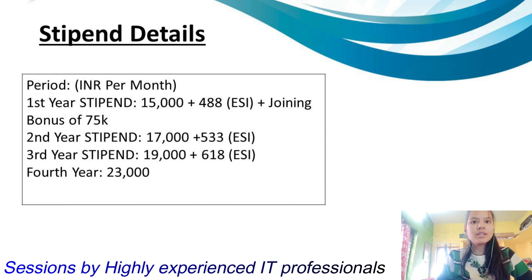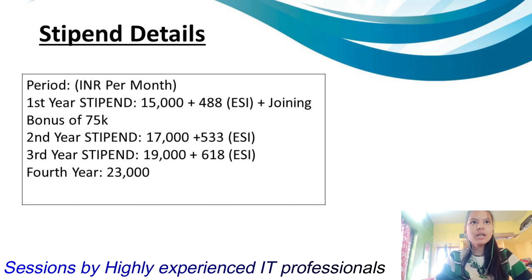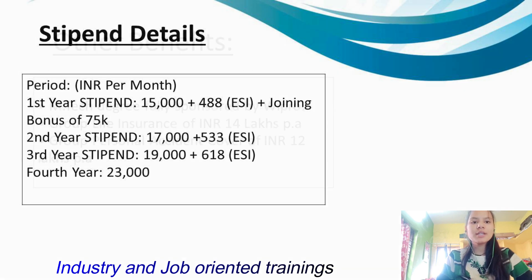You will get a lot of perks at Wipro. If you are selected at Wipro, you will get a joining bonus of 75,000 rupees. In the second year, your salary will be 17,000 plus 533 ESI. In the third year, your monthly salary will be 19,000 plus 16,000 ESI. And in the fourth year, your monthly salary will be 23,000.